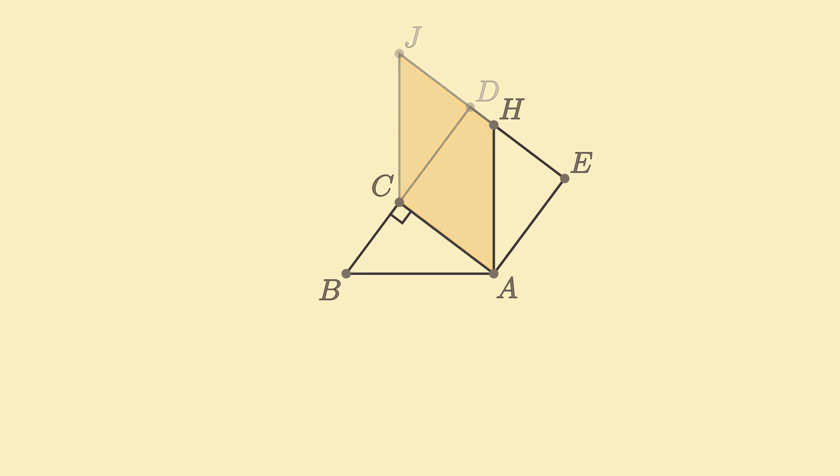Looking at the labeled figure, we can see that if we show triangle ACB is congruent to triangle AEH, then we automatically know that side AH, which forms the right side of the final figure, has length c.